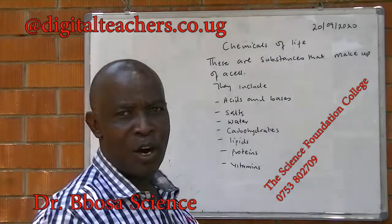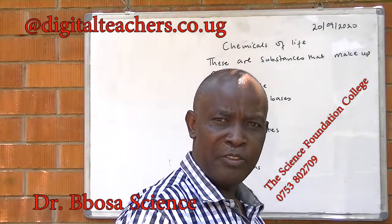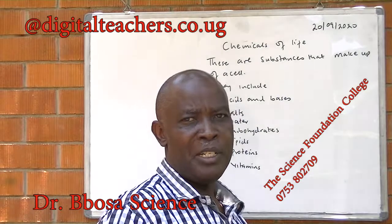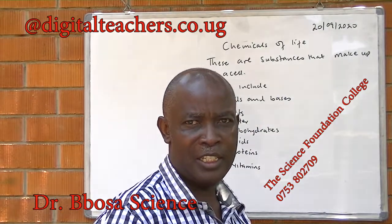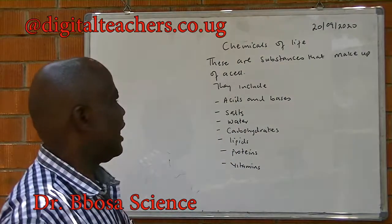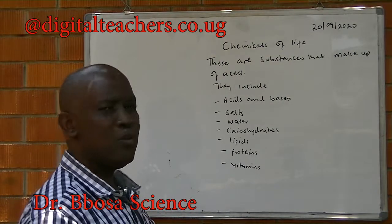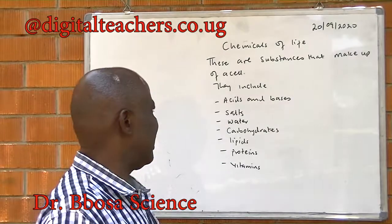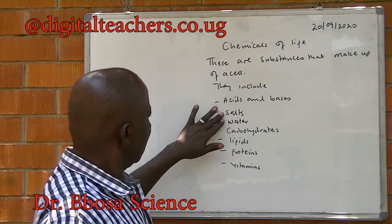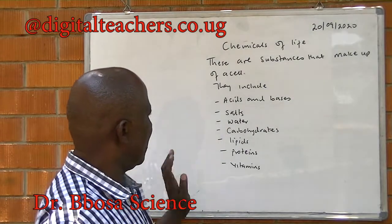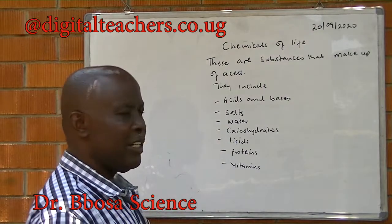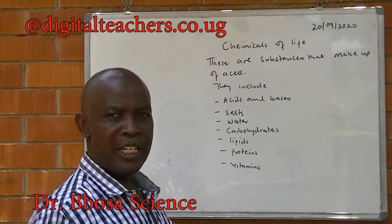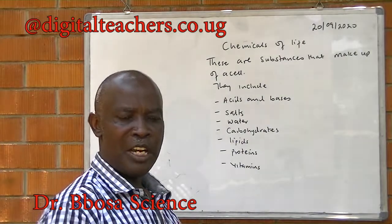Today, we are going to look at the chemicals of life. The lesson is best for A-level students. These are substances that make up a cell. They include acids and bases, solutes, water, carbohydrates, lipids, proteins, and vitamins.